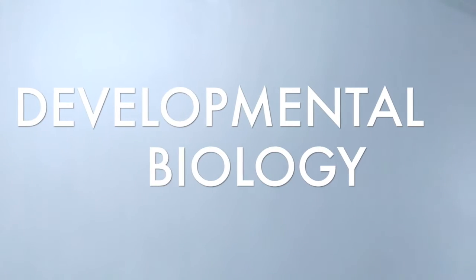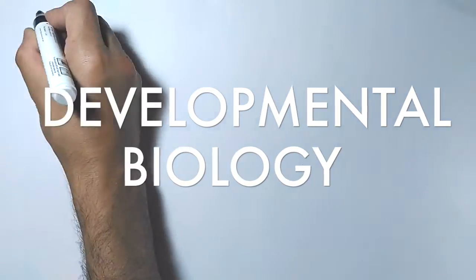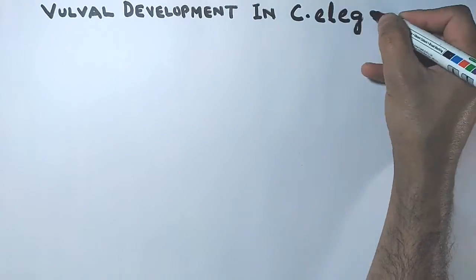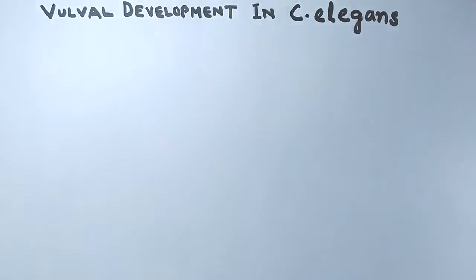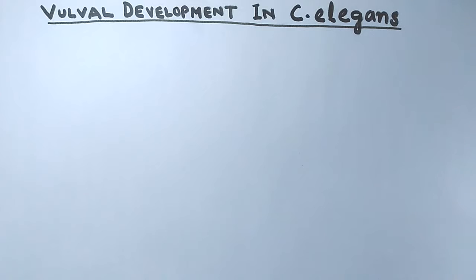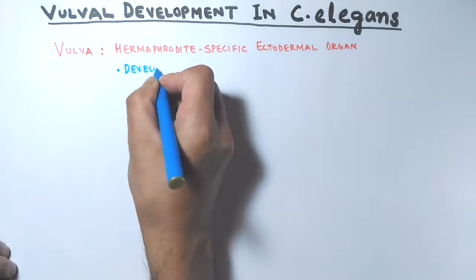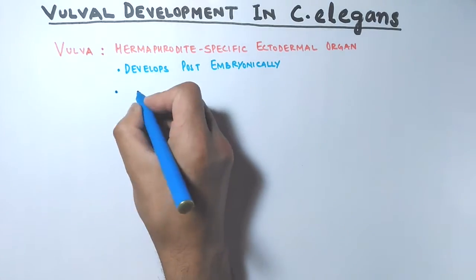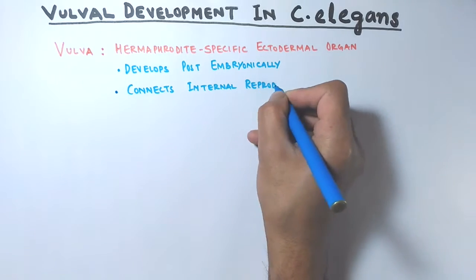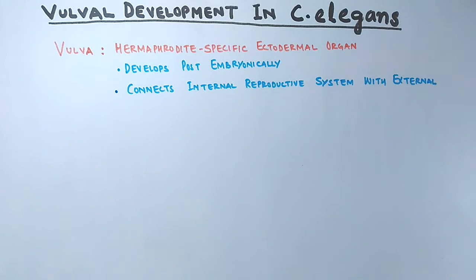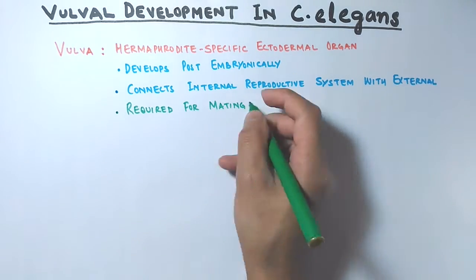This is a video on developmental biology where we will be discussing vulva development in Caenorhabditis elegans, or simply C. elegans. Before we get to the developmental part, we will first see what the vulva is. The vulva is a hermaphrodite-specific ectodermal organ that develops post-embryonically. It connects the internal reproductive system with the external environment. It has two major functions: first, it is required for mating.